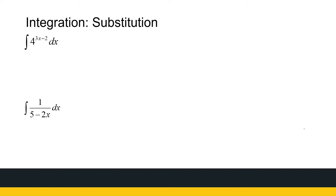In the first one, we've got 4 to the power 3x minus 2. I know how to find the antiderivative of 4 to the power u, or 4 to the power x — that's one of our standard ones — but let's see how we're going to do it with the 3x minus 2. I don't like the 3x minus 2, so I'm going to say let u be equal to 3x minus 2.